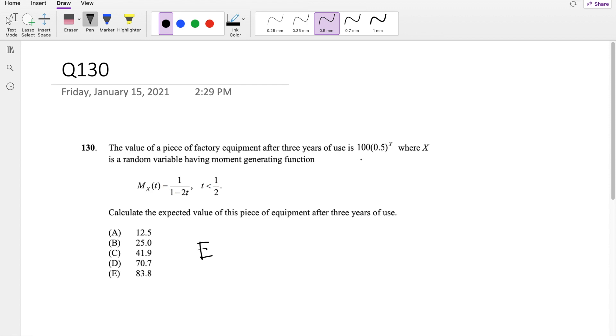And they say the value of this after 3 years of use is this thing right here. So they're basically saying, find the expected value of 100 times 0.5 to the X. We can actually throw the 100 out because it's a constant. So then you get 100 times the expected value of 0.5 to the X.